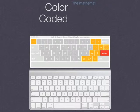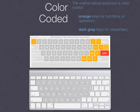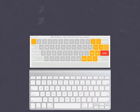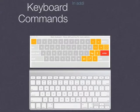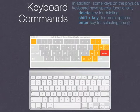The mathematical keyboard is color coded: orange keys for functions or operators, and dark grey keys for characters. In addition, some keys on the physical keyboard have special functionality: the Delete key for deleting, Shift plus A key for showing more options for that key, Enter key for selecting one of the options, and the Right arrow key on the bottom right corner for tabbing through expressions.